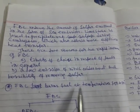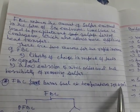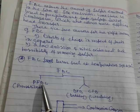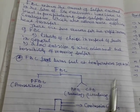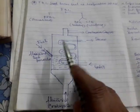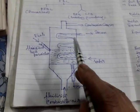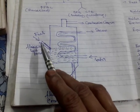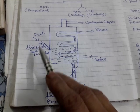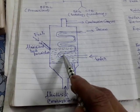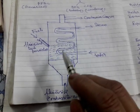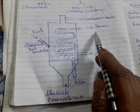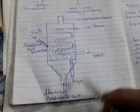FBC burns fuel at approximately 750 to 900 degrees Celsius. There are two types of FBC: pressurized fluidized bed combustion and bubbling or circulating fluidized bed. In the simple diagram, fuel particles enter the combustion chamber along with fluidized combustion air, water enters the tube and steam comes out, and combustion gases exit.